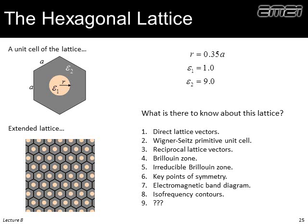Now let's do the same thing for a hexagonal lattice. Everything is very much the same — the procedure is identical. The directions of the vectors and the shapes of the Brillouin zones are a little bit different, but the procedure is the same. The upper left is our unit cell — we define it in a very similar way with lattice spacing A. There's a cylinder of radius R with dielectric constant epsilon 1, and the fill region has dielectric constant epsilon 2, using pretty much the same parameters as with our square lattice. An extended lattice would look like this — the black lines are just for visualization.